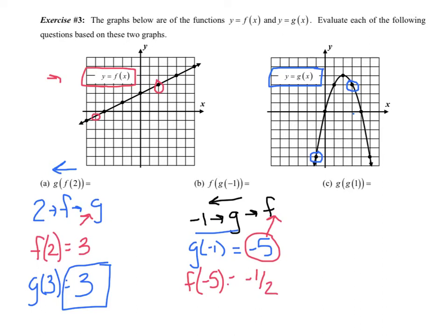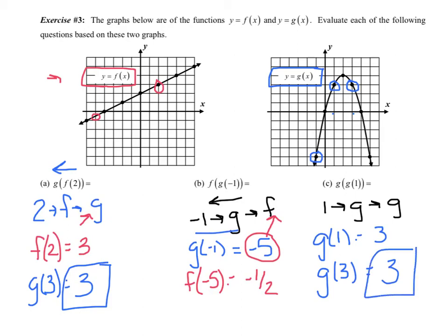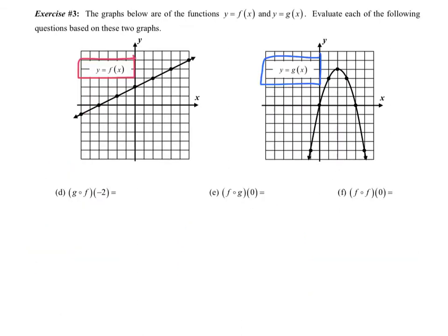Lastly, G of G of 1. So 1 goes into G, output goes back into G. G of 1 on the blue graph has a height of 3. Then G of 3 back on the G graph also has a height of 3. Composition can be written this way as well — pause it, try the practice problems on your own, and see if we get the same answers.